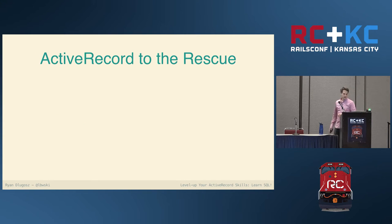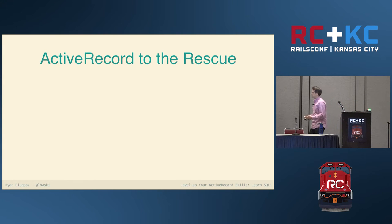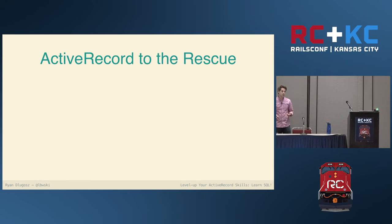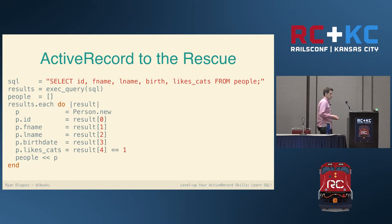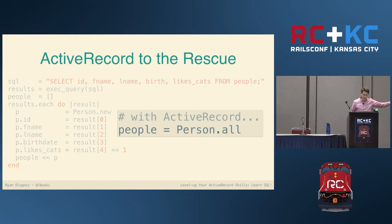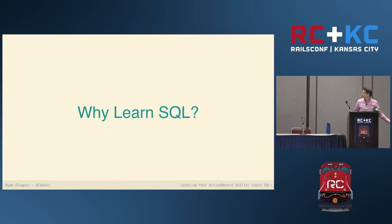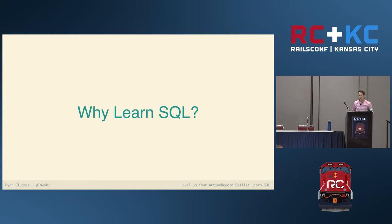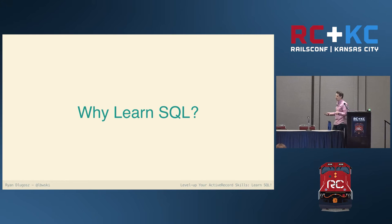Fast forward to the mid-2000s and ORMs are starting to become popular. In the Java space we had Hibernate and OJB; in Rails we have ActiveRecord. With ActiveRecord you take that giant mess of code and replace it with a one-liner. So if ActiveRecord can replace all that, why should you bother to learn SQL?